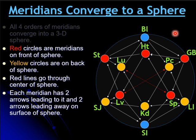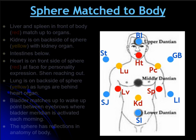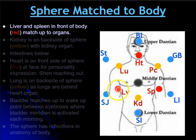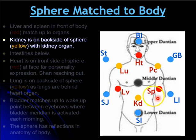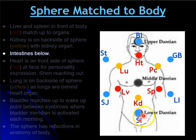Now I'm going to match the sphere to the body. Taking this body and putting it inside the middle of the sphere, I'll show how the meridians match up to organs. The liver and spleen in front of the body match up to organs right under the rib cage. So if you put the spherical pattern over the body, those organs match up. The kidney is on the back of the sphere, matching the lower back where the kidneys are located. Down here you have the small intestine around the small intestines, and over here the large intestine in the general vicinity of where the large intestine is situated.